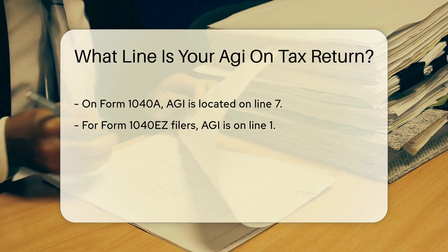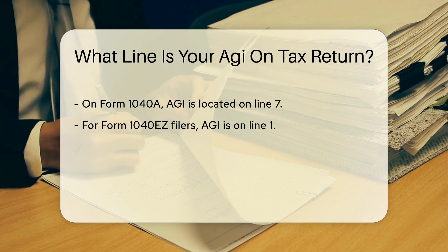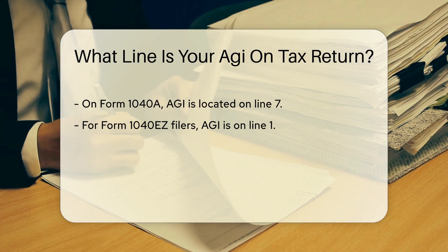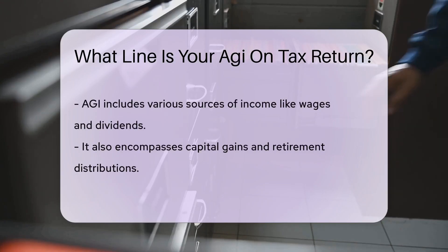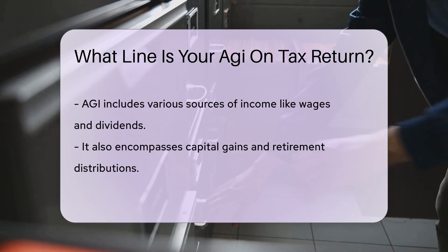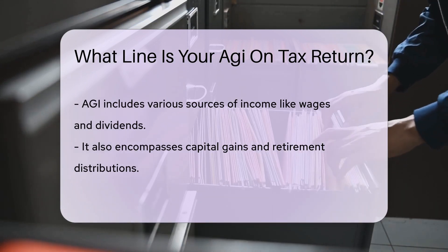This number reflects your income after specific adjustments. Your AGI includes wages, interest, dividends, capital gains, retirement distributions, and other sources of income.